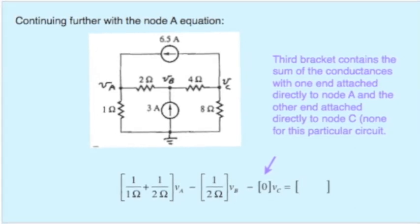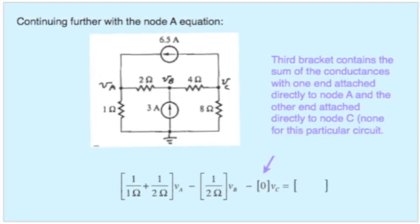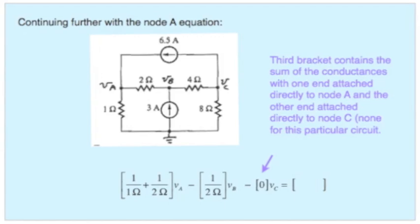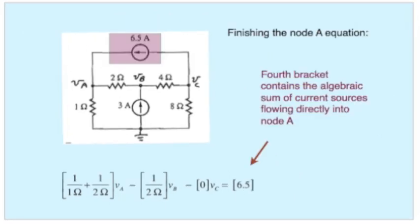Now only one term to go, that empty bracket on the right hand side of the equal sign. Let's turn our attention to that. For that we search the circuit and we ask, are there any current sources that have one end directly connected to node A? There is the 6.5 amp source. The arrow points toward the node, so we will enter a plus 6.5. And now we have a complete node voltage equation for node A. We obtained it using a by-inspection method that automatically satisfies all the connection constraints and all the element constraints associated with that node.